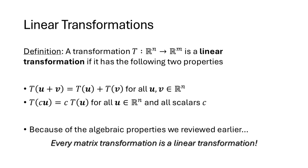When we have any transformation from Rn to Rm that has these two respecting properties — where T respects vector addition and respects scalar multiplication, where T(u + v) = T(u) + T(v) and T(cu) = c·T(u) — we call that a linear transformation. Every matrix transformation has these two properties, so every matrix transformation is a linear transformation. But there could be other transformations that are not matrix transformations yet still have these two properties.